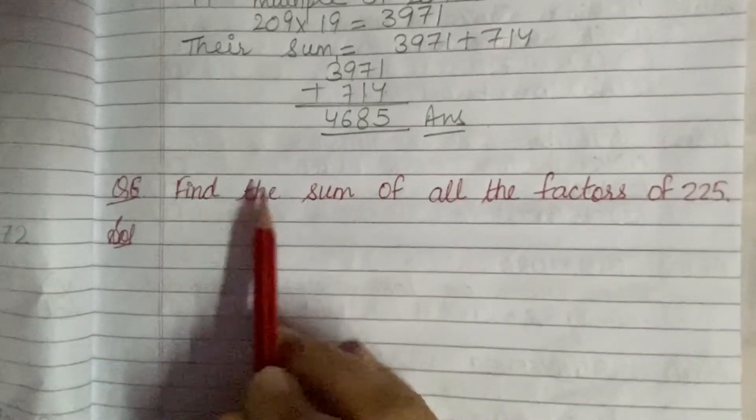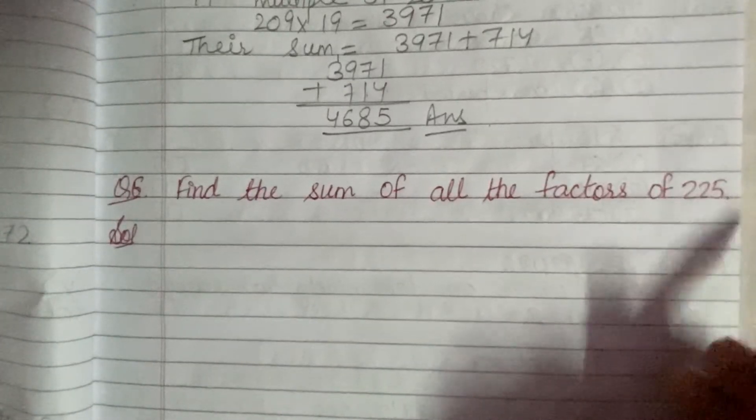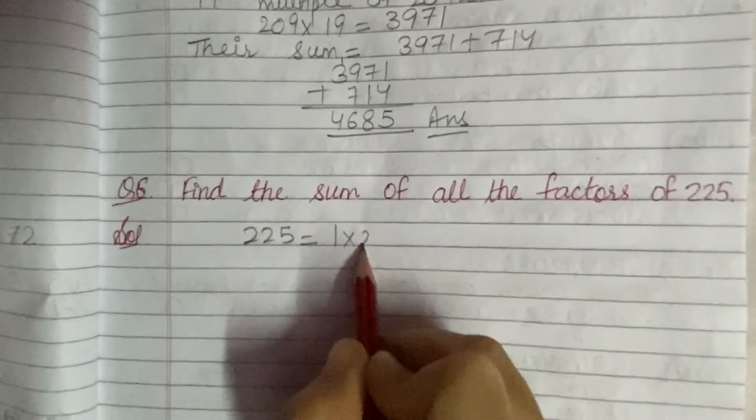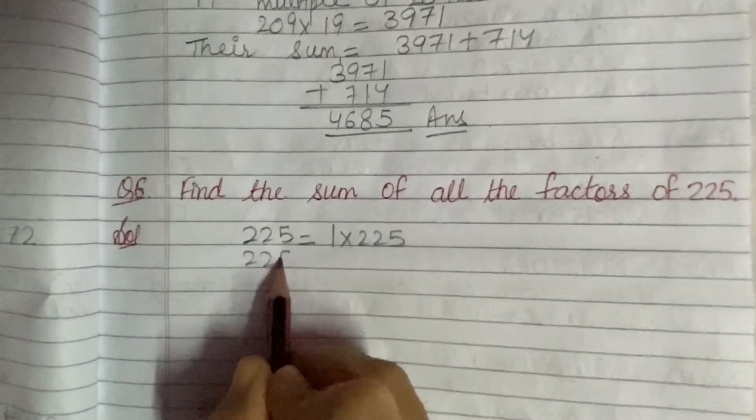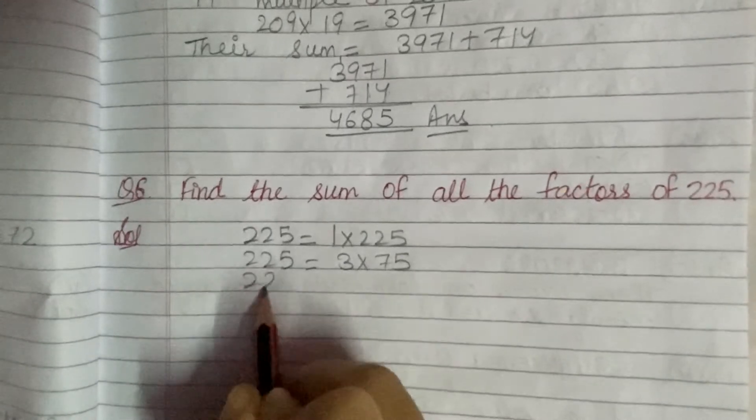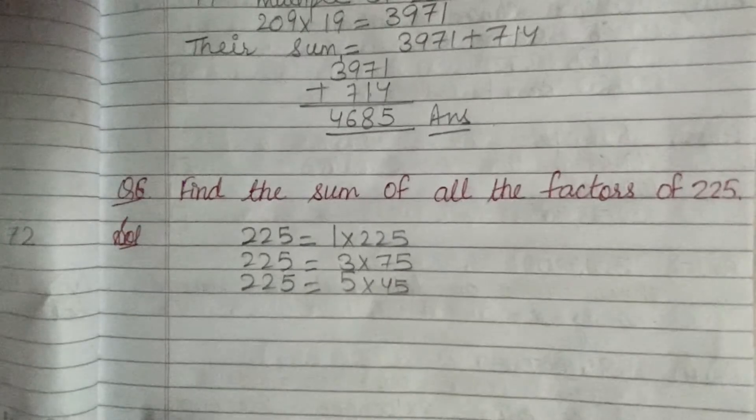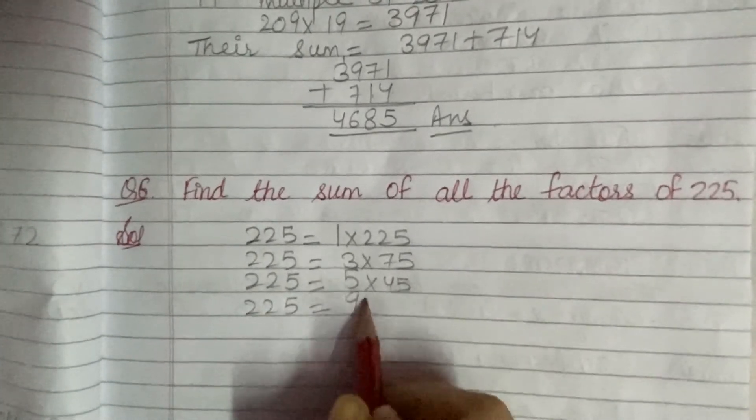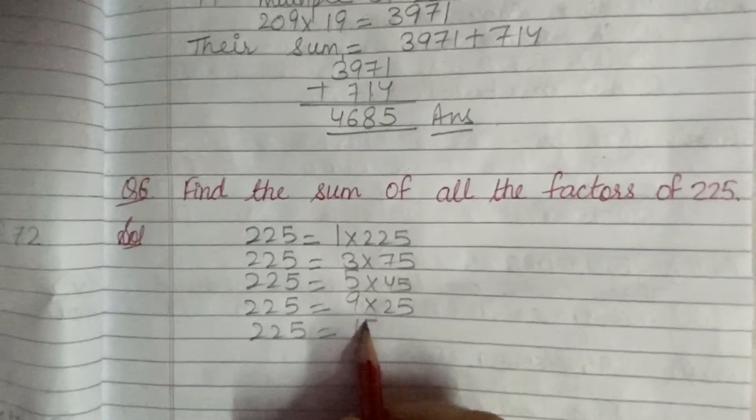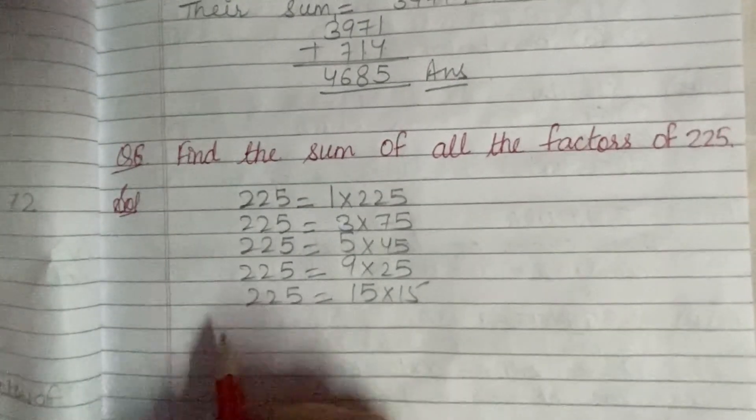Now next I have taken question number 6. It says: find the sum of all the factors of 225. Now students, 225 can be written as 1×225, 3×75, 5×45, 9×25, and 15×15. From here, what are the factors?